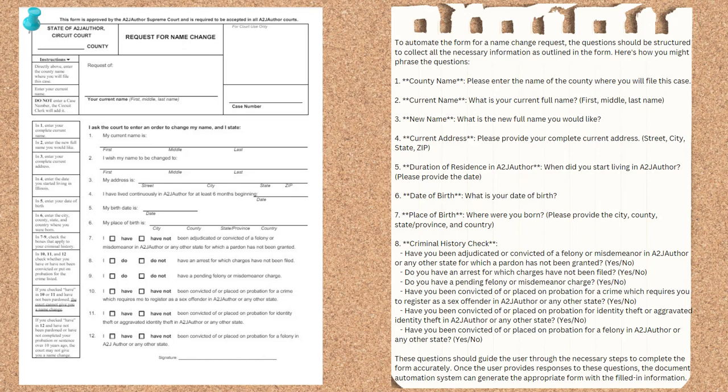The example form I used was one I have altered for A2J Author training exercises, but it's based off a real name change petition. It's in PDF format, and I opened it in a tab alongside ChatGPT. I selected all the text in the PDF and copied it along with that 'what questions would you ask to automate this form' prompt. The results are on the right-hand side — it grouped the form into 8 question sections. This looks a lot like the outline storyboard format I talked about in video 1 of this section. I could easily take this and fill in the variables needed for these questions and have a solid first draft of my interview right here.